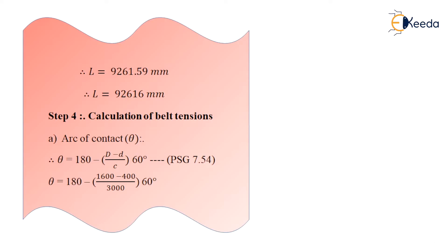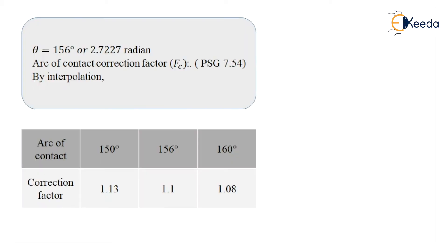Next step is to calculate the belt tension. For that, I know the formula for arc of contact that is θ as 180 minus (capital D minus small d) upon C multiplied by 60 degree. After substituting the value of capital D as 1600, small d as 400, and C as 3000, I get the value of θ as 156 degree or 2.7227 radians.